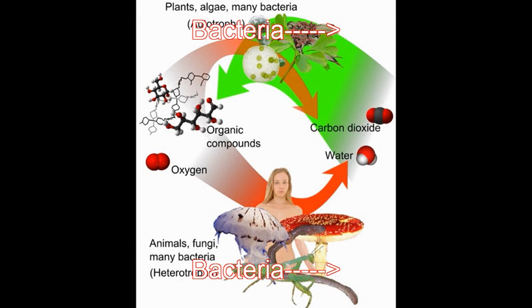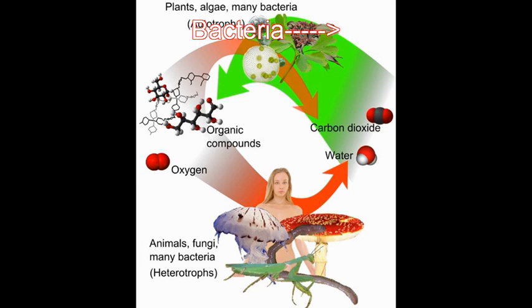Bacteria. There are many types of bacteria with a mixture of features of fungi, animals, and plants. Like animals, bacteria obtain their carbon for their carbon chains from fungi, animals, and plants. Some bacteria use sunlight for their energy source, just like plants do, while other bacteria use the organic compounds of fungi, animals, and plants, just like animals do.